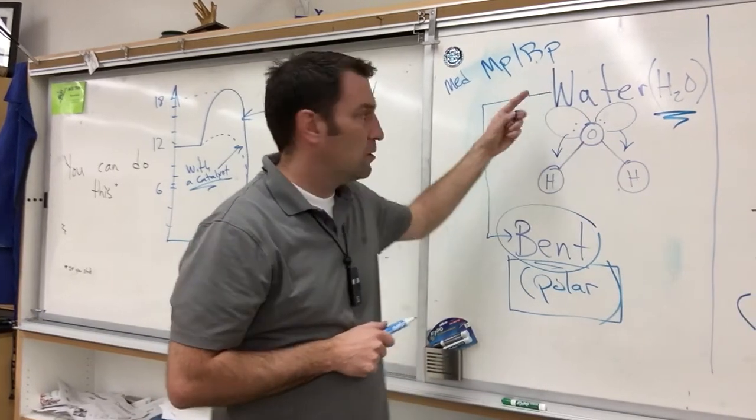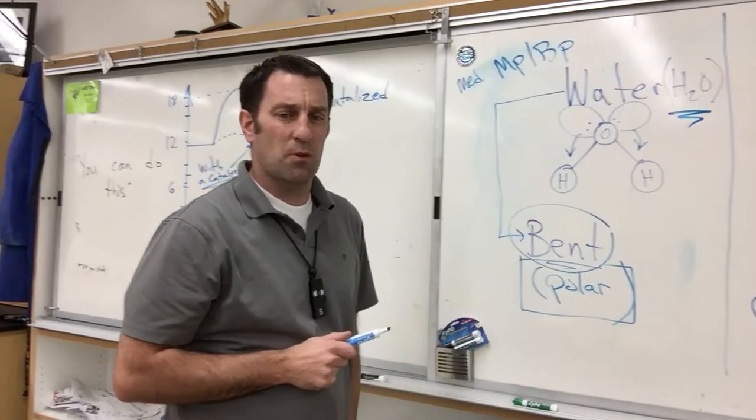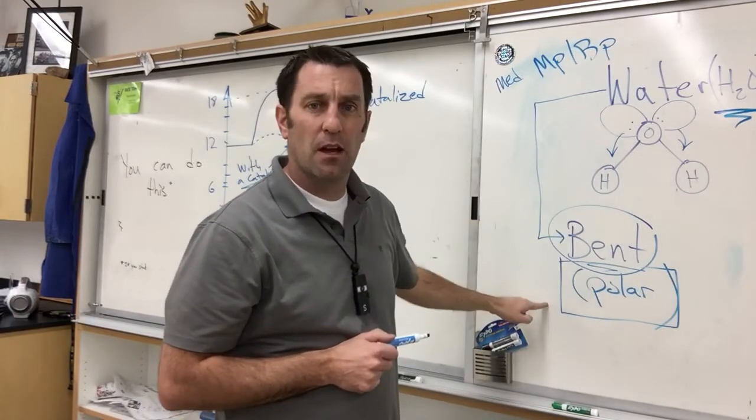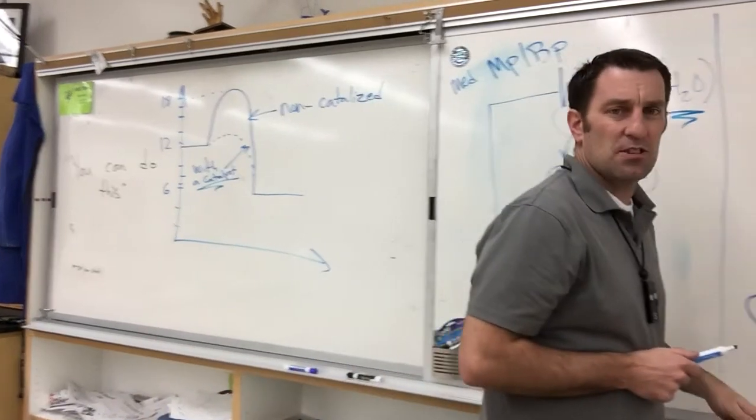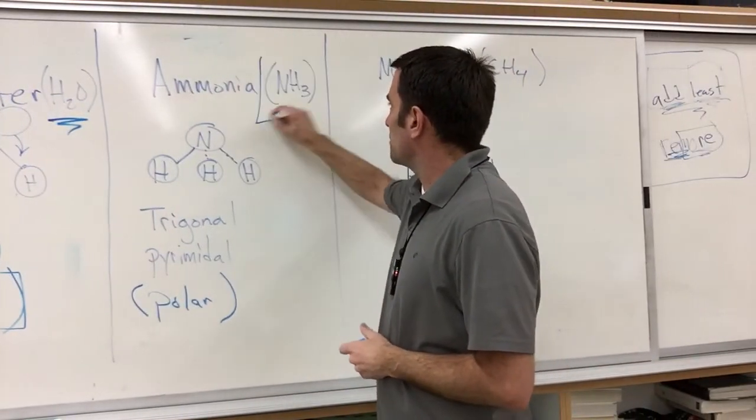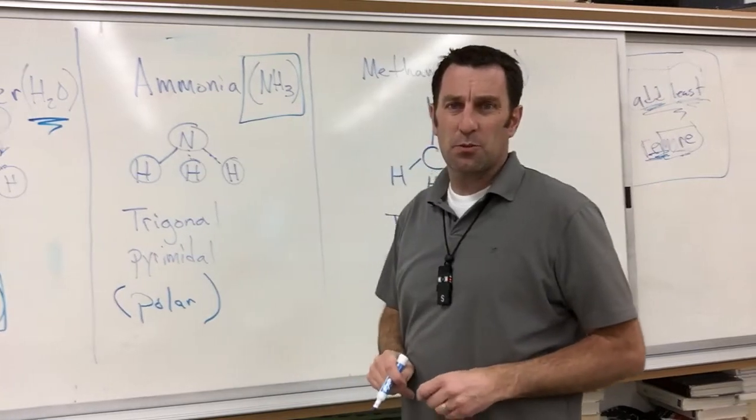Now there's more than one reason why, water also has hydrogen bonding, but for right now, just know water is bent and polar. Now moving to the next one, we have ammonia. Ammonia has the chemical formula of NH3.